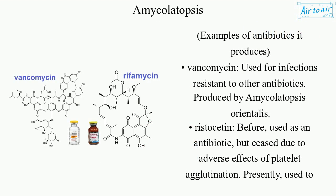Examples of antibiotics it produces: Vancomycin, used for infections resistant to other antibiotics, produced by Amycolatopsis orientalis.